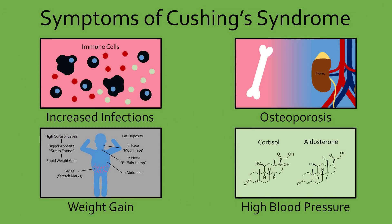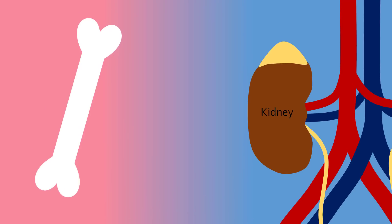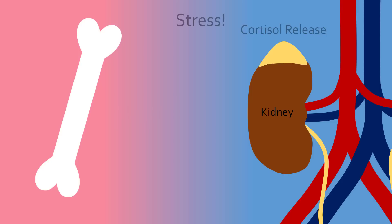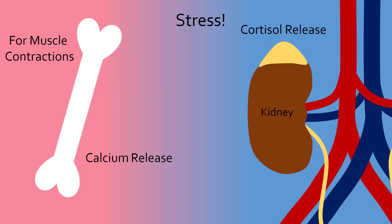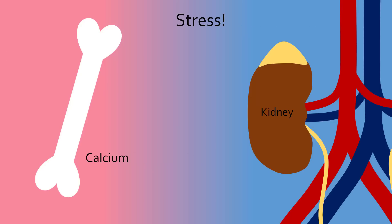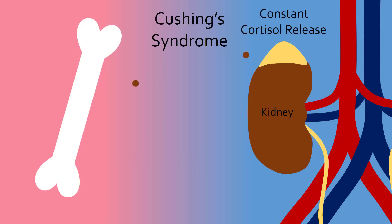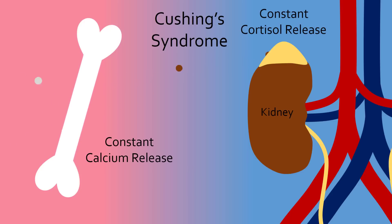Another function of cortisol is bone breakdown, which is why another symptom of Cushing's syndrome is osteoporosis, or weak bones. Bones, aside from providing structural support, also act as storage for calcium. Calcium ions are extremely important because they allow muscles to contract. Therefore, in times of stress, when cortisol is secreted, calcium is released from bone so that the muscles can contract to fight or run. Normally, this calcium is replenished when the stressful situation ends, but if cortisol is continuously released such as in Cushing's syndrome, bones will constantly release their calcium and become weaker and weaker, resulting in osteoporosis.